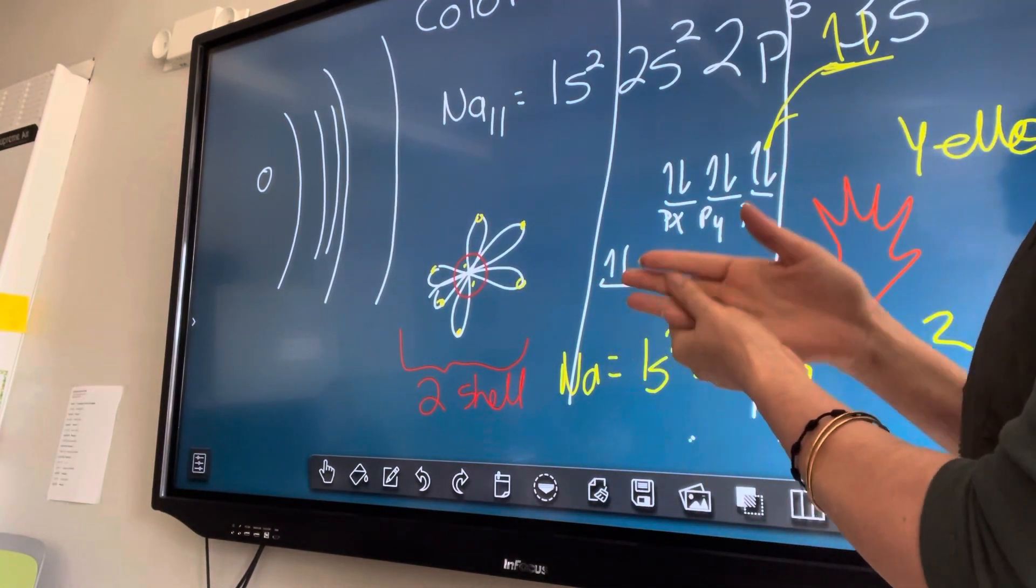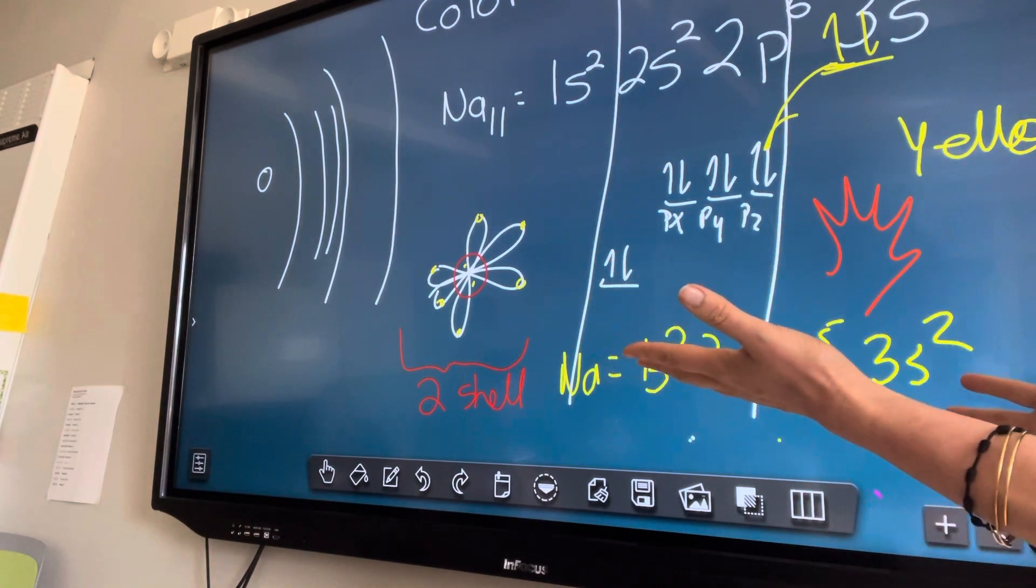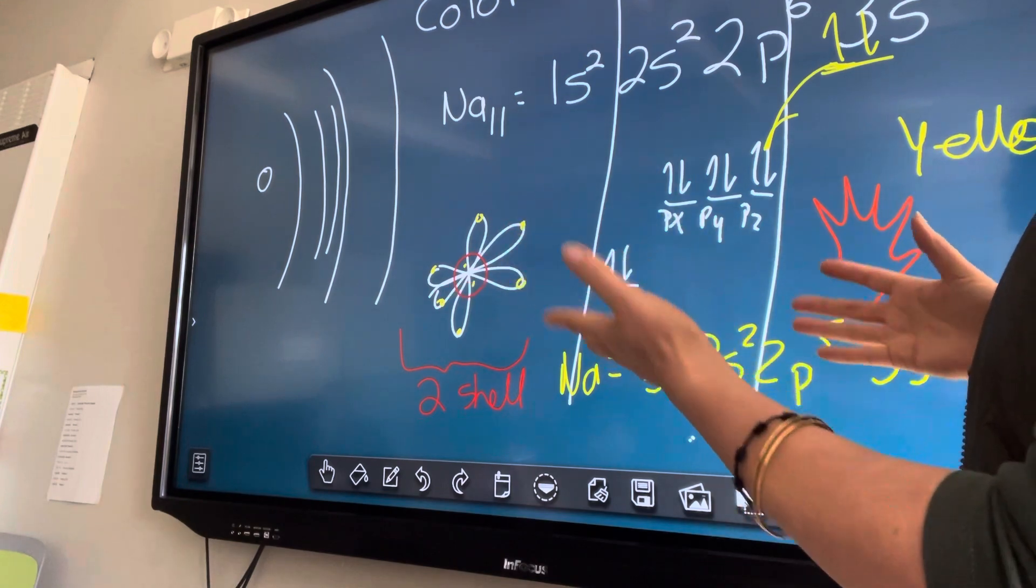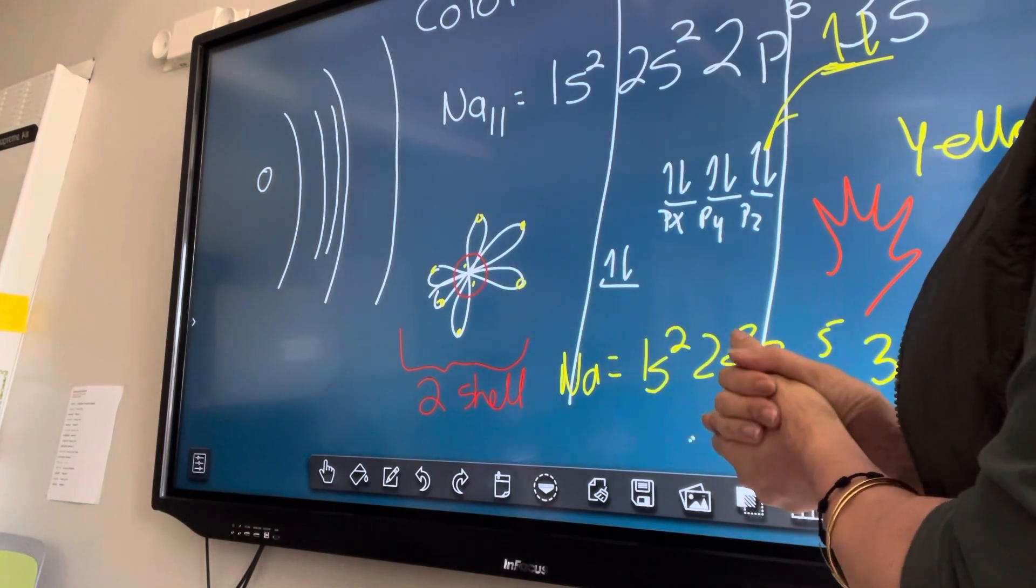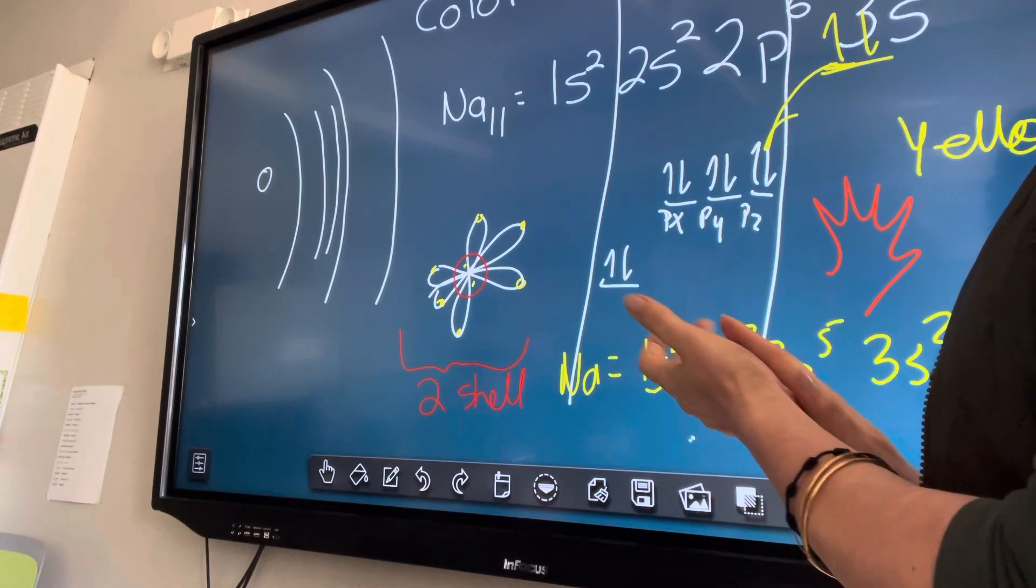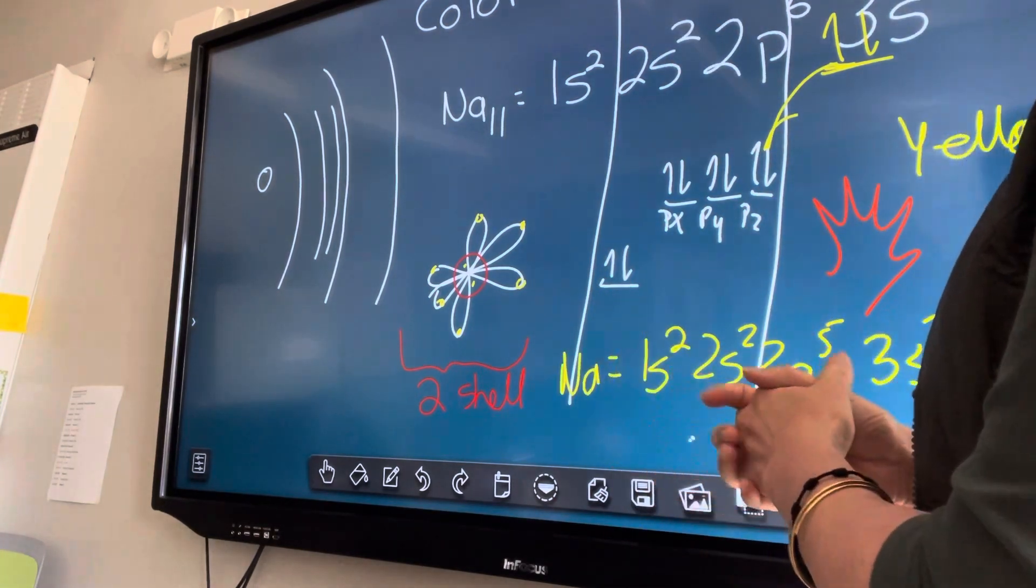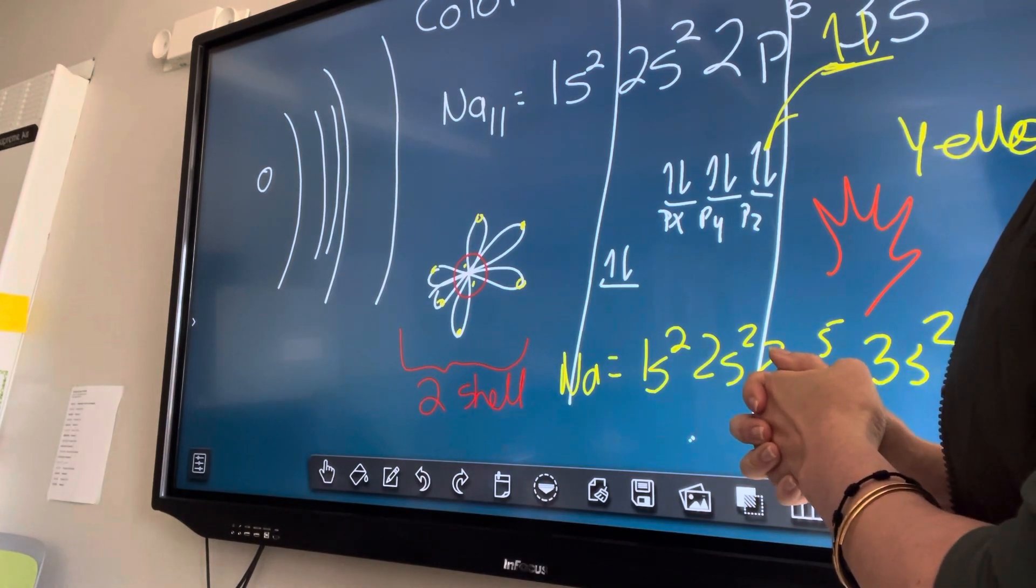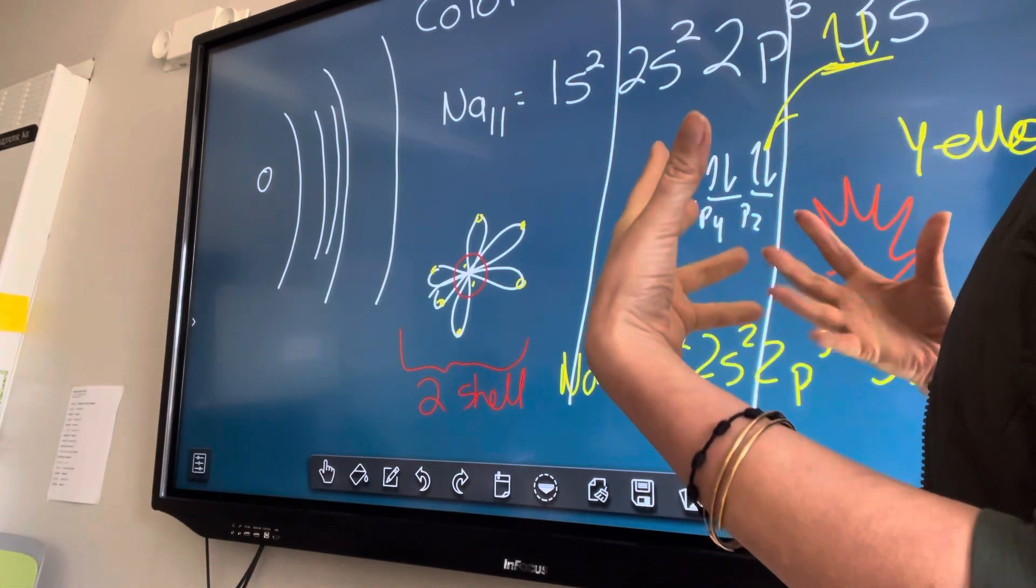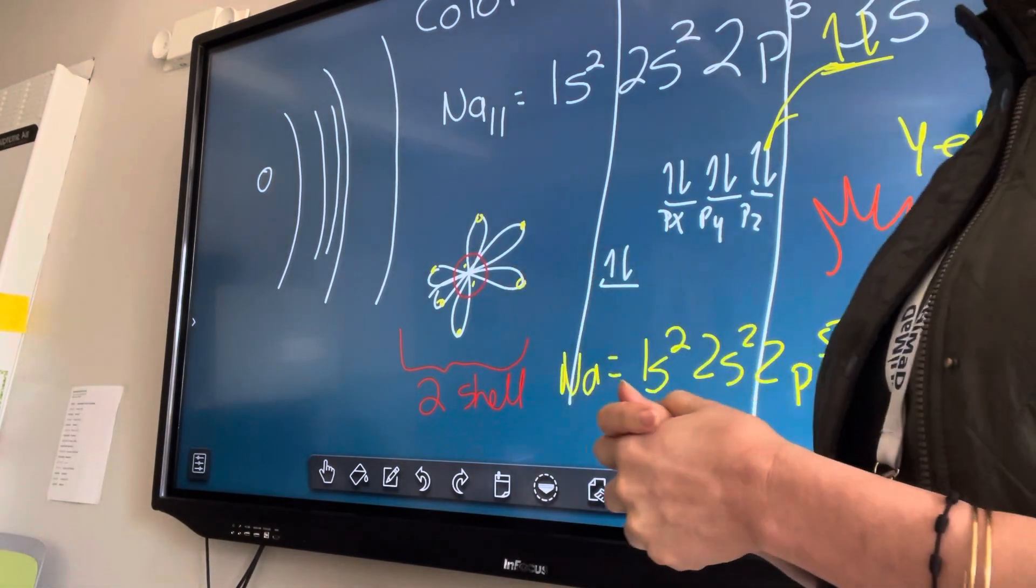Every element has a distinctive signature of colors that they emit. So not all, actually not all elements emit color because you have to have the right amount of energy for them to emit color. You have to jump to the exact level and you have to give out that frequency in order to give energy. But the elements that do give colors, they have a distinct signature which we will see later as well.